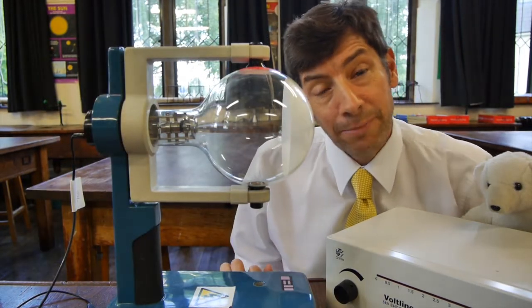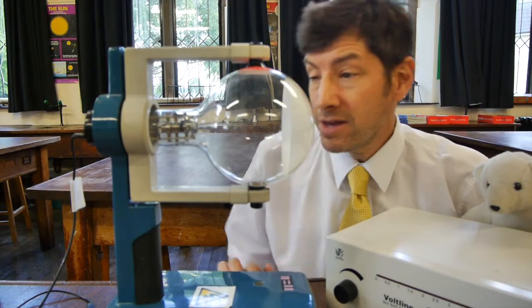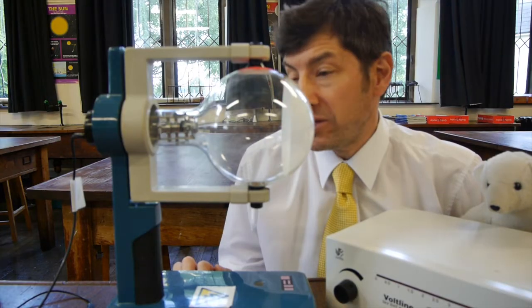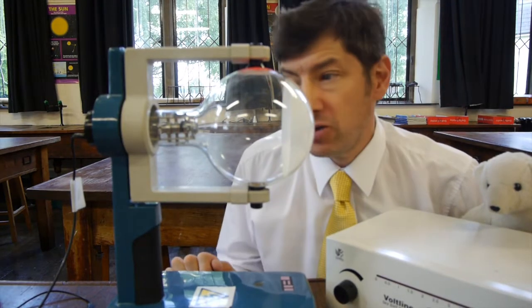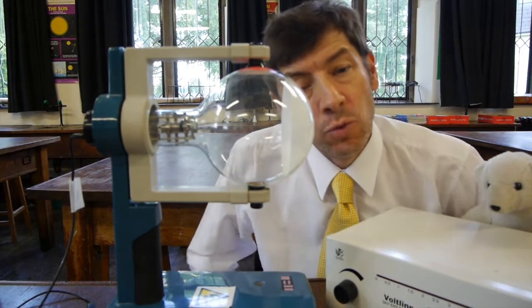So let's look at the apparatus we're going to use today to demonstrate electron diffraction. I've got a tube here that's exactly like the one I showed in an earlier video, which is an evacuated glass tube and in it is an electron gun.